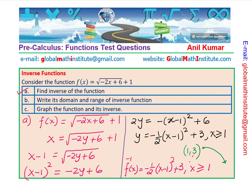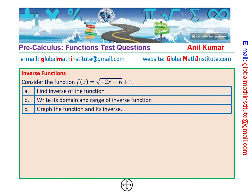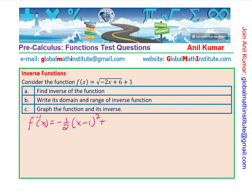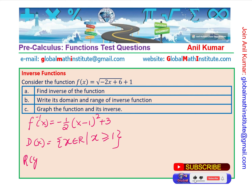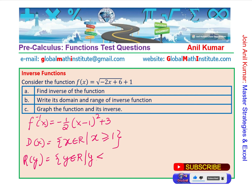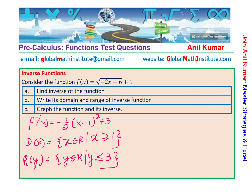For Part B, the domain and range of the inverse function: the inverse is -½(x - 1)² + 3. The domain is x ∈ ℝ where x ≥ 1, and the range is y ∈ ℝ where y ≤ 3. That is the answer for Part B. We now have both functions and can sketch the graph.